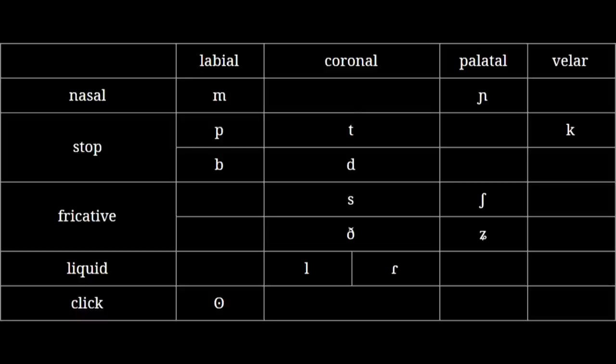Despite its irregularities, I can for the most part accept this as being a consonant inventory which conceivably could show up in a natural language — with the one glaring exception of that bilabial click. Click consonants aren't very common, but the languages that they appear in tend to have a lot of them. As far as I can tell, there are no natural languages that have exactly one click, and bilabial clicks themselves are uncommon for click consonants. That's why that bilabial click is a clear giveaway that Stuart wasn't exactly worried about his language feeling natural.